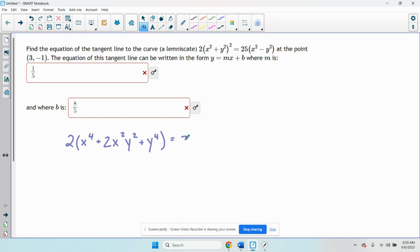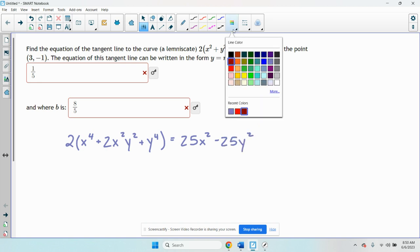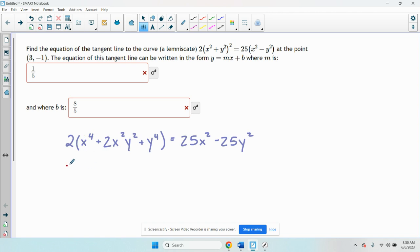Equals, now I can just distribute the 25, I get 25x squared minus 25y squared. From there I'm going to distribute the two and I get 2x to the fourth plus 4x squared y squared plus 2y to the fourth equals 25x squared minus 25y squared.